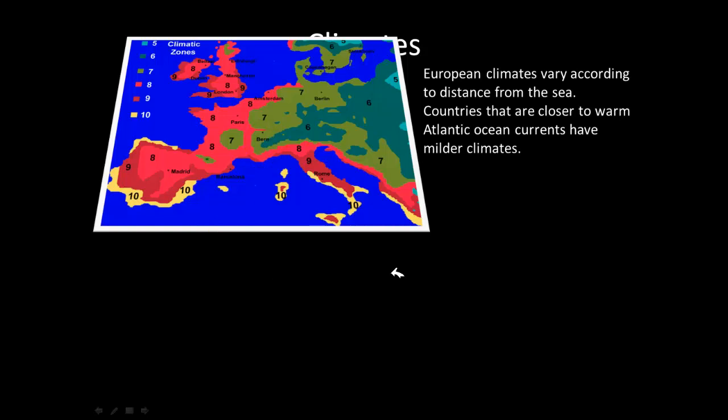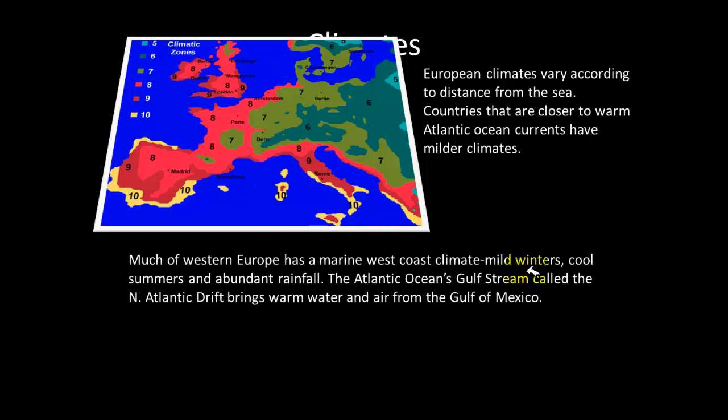European climates vary according to distance from the sea. Countries closer to warm Atlantic Ocean currents generally have milder climates. Milder means it's not as humid as here in Louisiana — temperatures don't get quite as hot in the summer, but it does get a little colder. So milder or Mediterranean climates mean somewhere not as humid, with winters a little colder and summers not quite as hot.